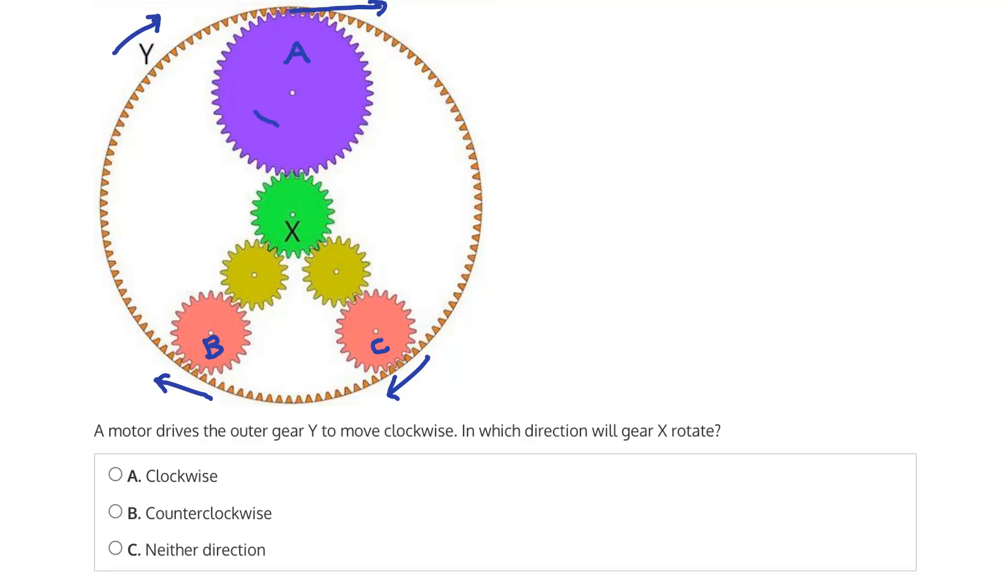Now, if these gears are rotating clockwise, and we know that for any two meshed gears, their direction of rotation will be opposite, then these two gears are going to be rotating counterclockwise.